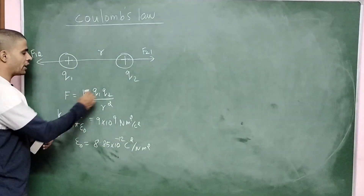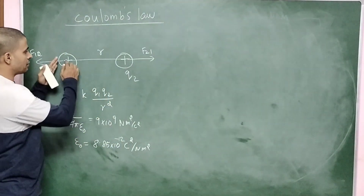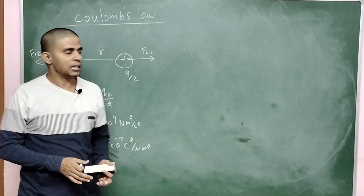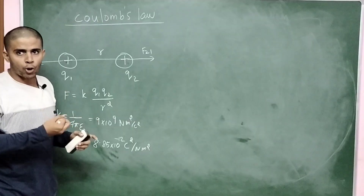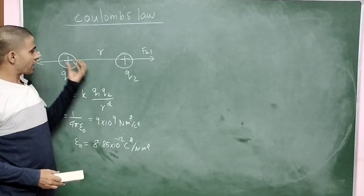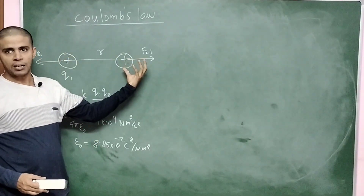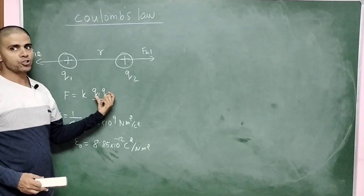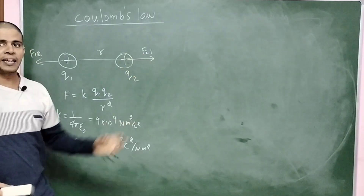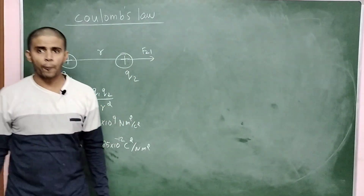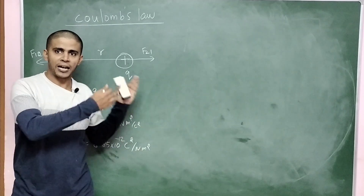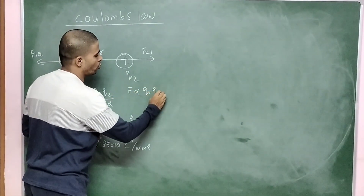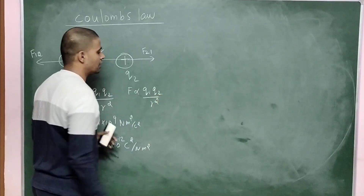Coulomb studied in detail that the force between two charges is proportional to the product of the charges Q1 and Q2, and inversely proportional to the square of the distance R between them. So F is proportional to Q1 times Q2 divided by R squared. This is Coulomb's law.